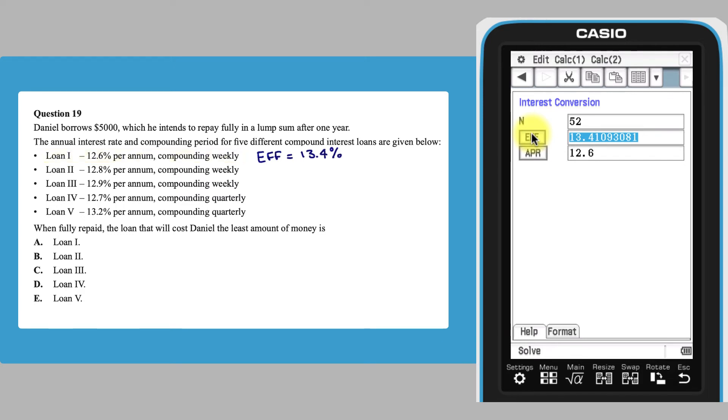This calculation can be repeated for a loan compounded quarterly with the lowest nominal rate, which is Loan 4. Change the end value to 4 and the nominal rate to 12.7. Tapping EFF shows that this loan has an effective interest rate of 13.31, meaning that this loan will cost you the least amount of money, and so the answer is D.